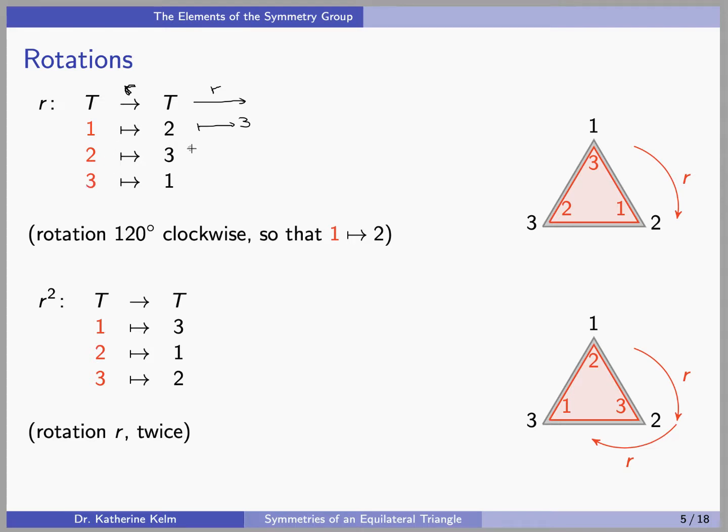R also sends 3 to 1, and so if you do R again, 3 will get sent to 1, and 1 will get sent to 2. And you can see here that this is the result of doing R twice. The 1 gets sent to 3, 2 gets sent to 1, and 3 gets sent to 2.